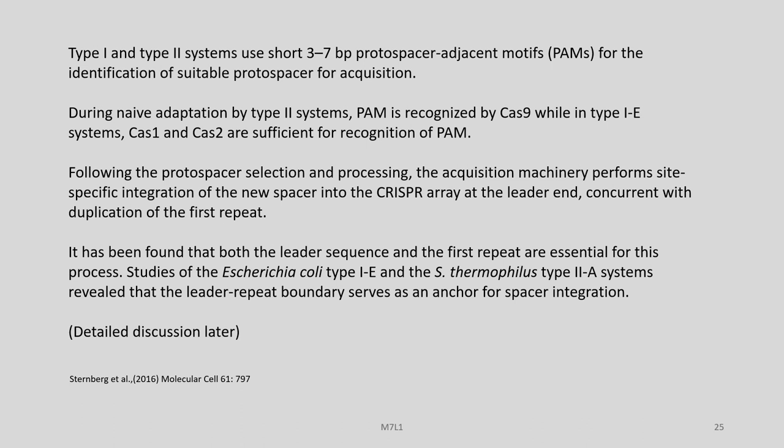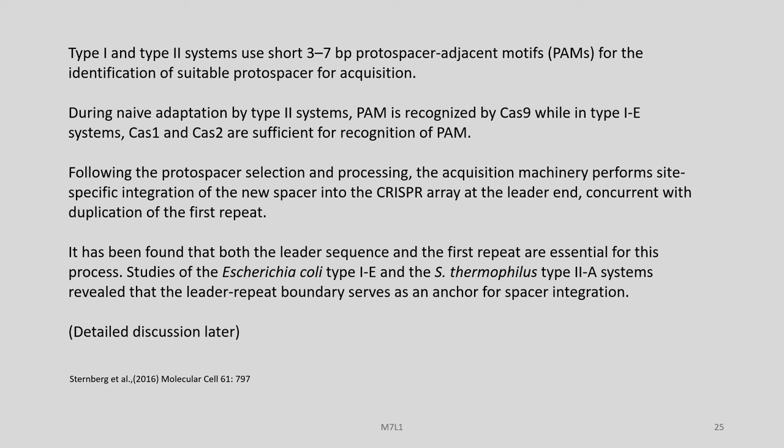Types 1 and 2 systems use short 3 to 7 base pair protospacer adjacent motifs, or PAMs, for identification of suitable protospacers for acquisition. During naive adaptation by type 2 systems, PAM is recognized by Cas9, while in type 1E systems, Cas1 and Cas2 are sufficient for recognition of PAM. Following protospacer selection, the acquisition machinery performs site-specific integration of the new spacer into the CRISPR array at the leader end, concurrent with duplication of the first repeat. Both the leader sequence and the first repeat are essential for this process.